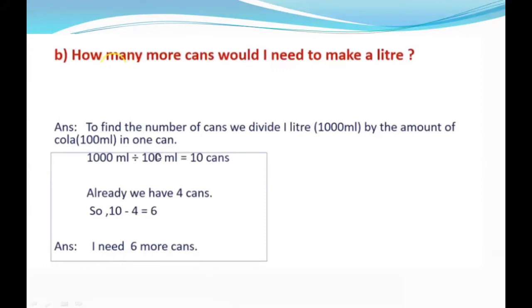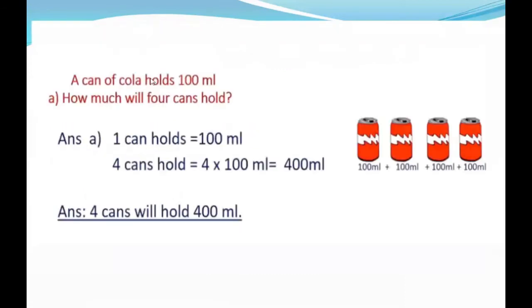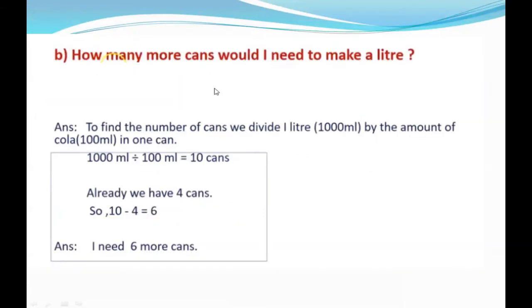So I need six more cans to make one liter. I will repeat one more time. I already have four cans because they said one can holds 100 milliliters. How much do four cans hold? So that means you have four cans—it is 400 milliliters. They said, how many more cans do you need to make a liter? One liter means 1000 milliliters. So one can is 100. How many cans do we need for 1000? 10 cans. We already have 4. So 10 minus 4 equals 6. So I need six more cans to have one liter—that means 1000 milliliters.